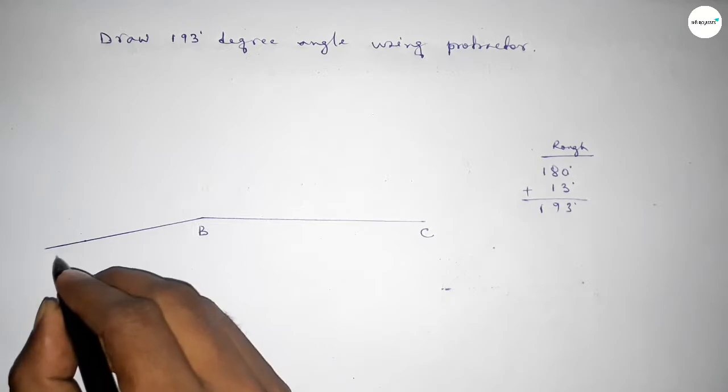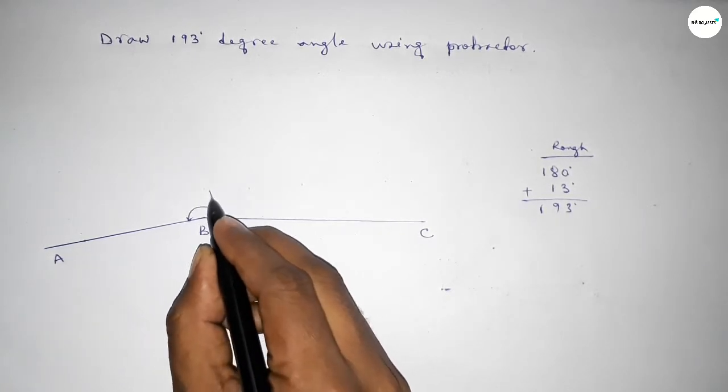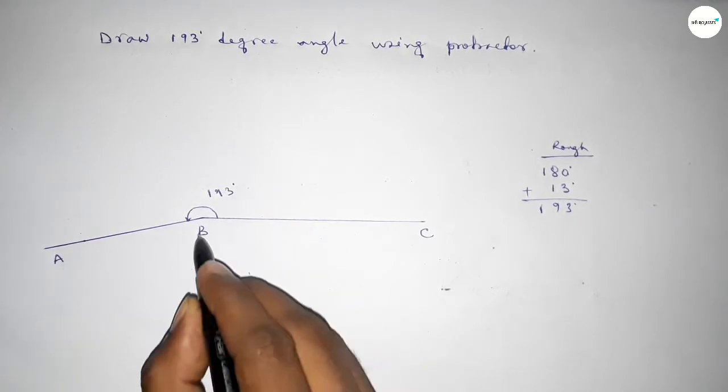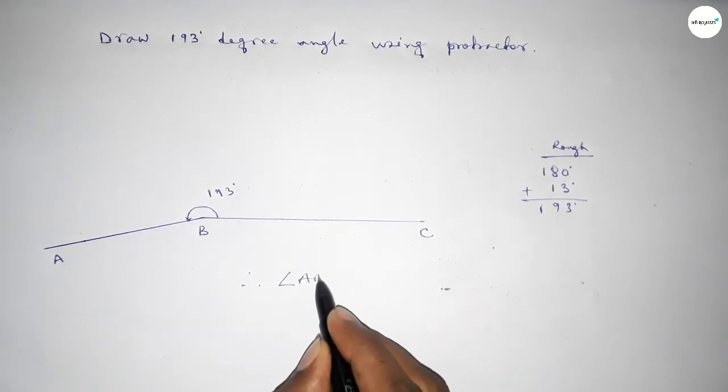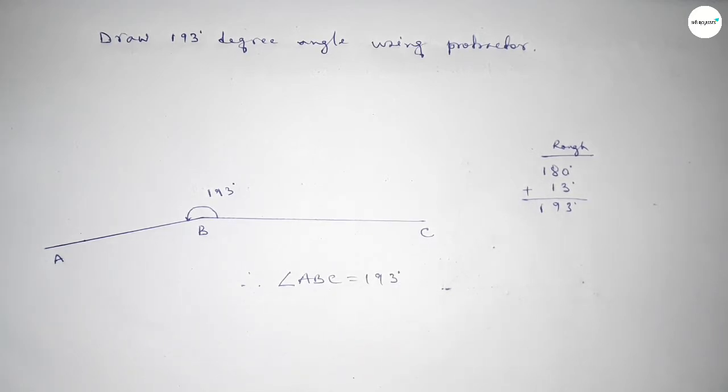So joining this line and taking here a point, angle ABC up to this is 193 degree angle. Therefore, angle ABC equals 193 degrees. That's all, thanks for watching, please share it.